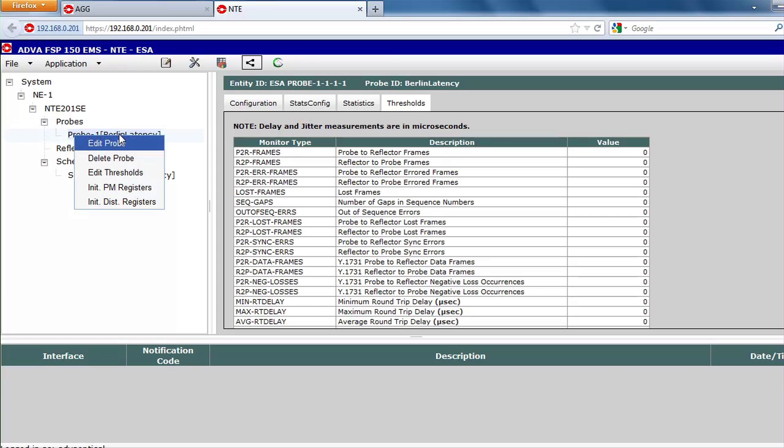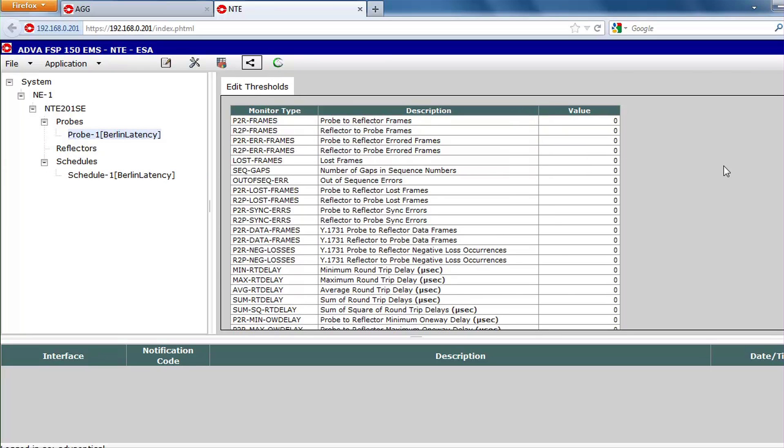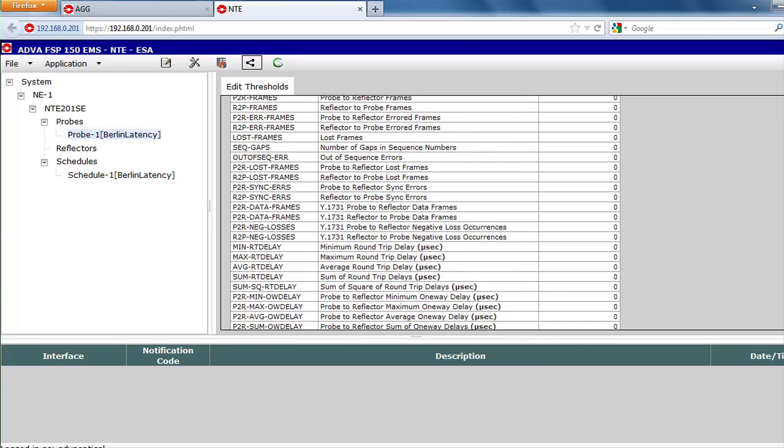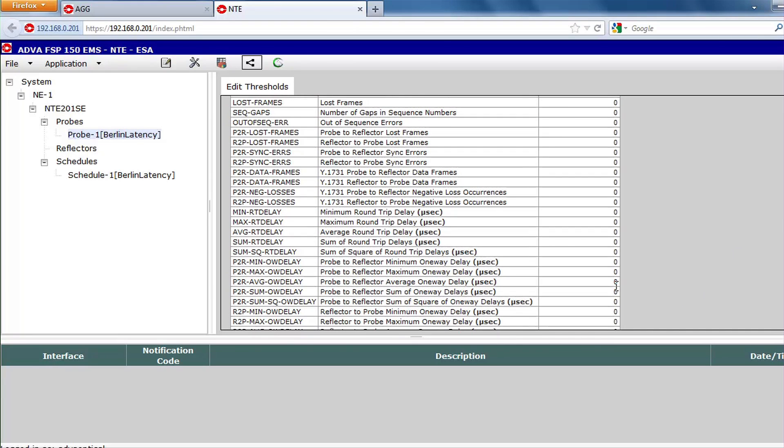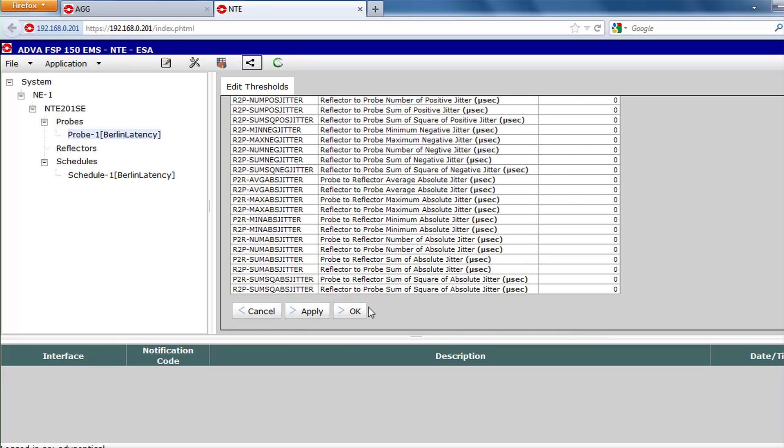These monitoring and alarm capabilities are critical for upholding SLAs. What's incredible here is that you can even set alerts for when you're nearing SLA parameters. This is critical when you're providing wholesale Ethernet services.